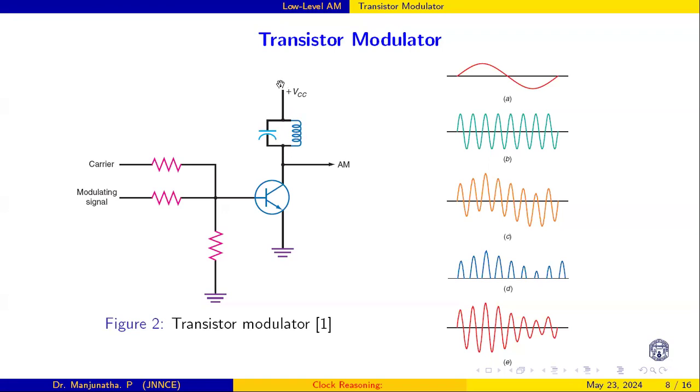The other side of this is connected to the VCC, and the output is taken out from the collector of this transistor. Coming to the base side, this is a carrier and a modulating signal.